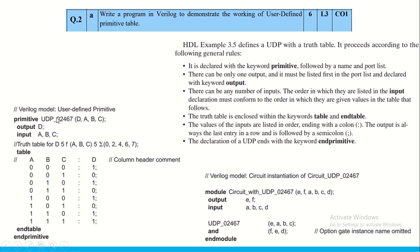Using the 'primitive' keyword, we define the user-defined primitive with variables A, B, C, D as outputs and inputs declared as in Verilog design. Using the 'table' keyword, we write the truth table directly: A, B, C are inputs, and after a colon, D is the output. Then 'endtable' and 'endprimitive' close the block.